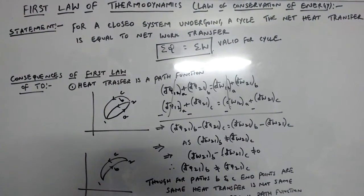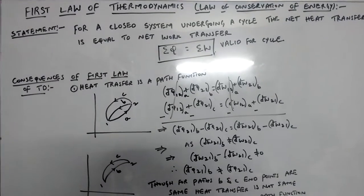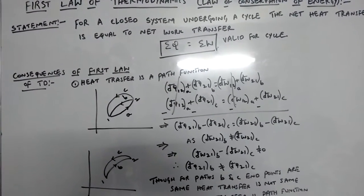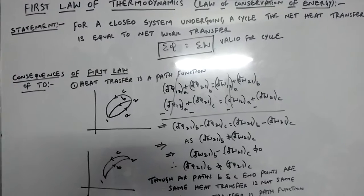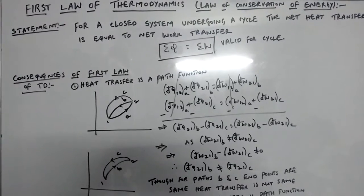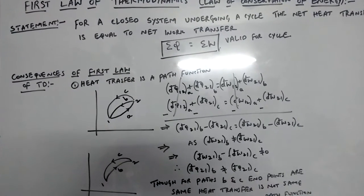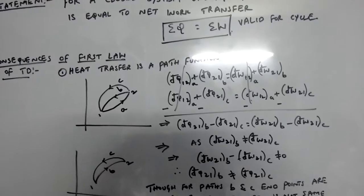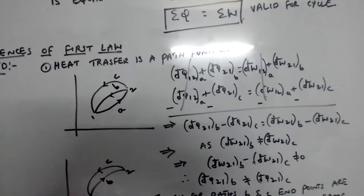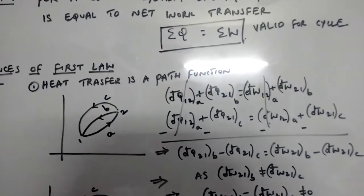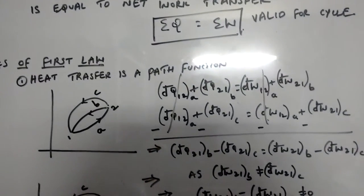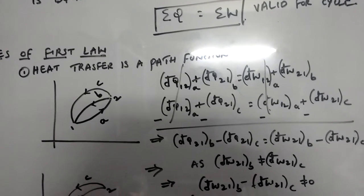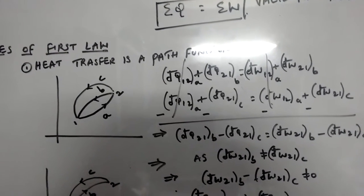Based on the first law of thermodynamics, several results or consequences come into existence. The first consequence according to the first law of thermodynamics is that heat transfer is a path function. Let us prove that heat transfer is a path function in the following way.